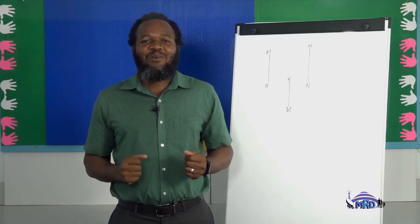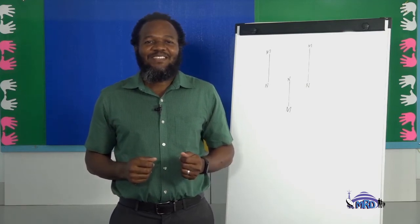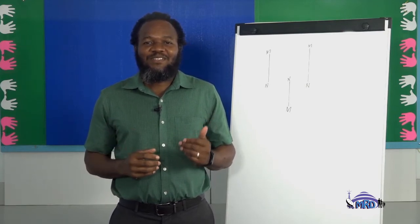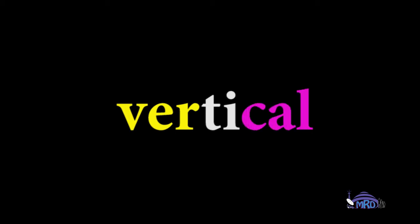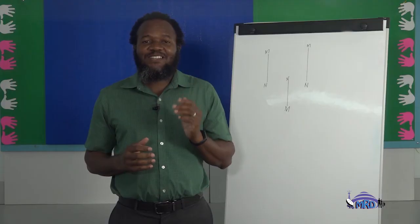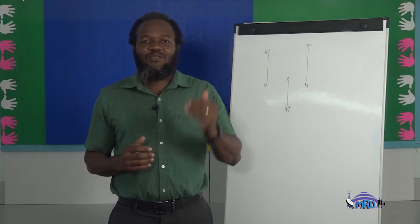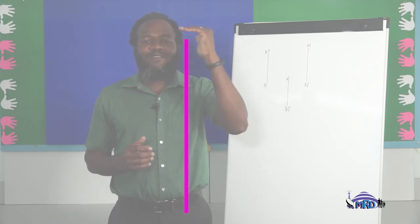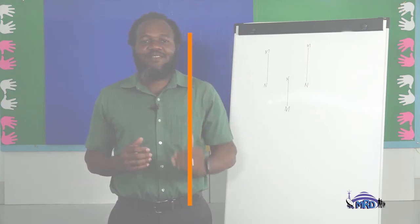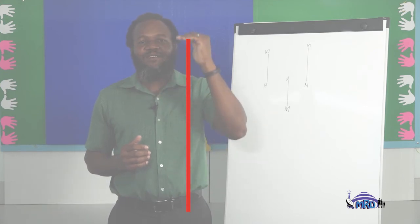Let's recap what we've done so far. Let's spell the word vertical — remember, let's use our syllables. V-E-R: Ver. T-I-T: Verti. C-A-L: Cal. Vertical. Remember, vertical lines are straight lines which go from top to bottom or bottom to top, from north to south or south to north.